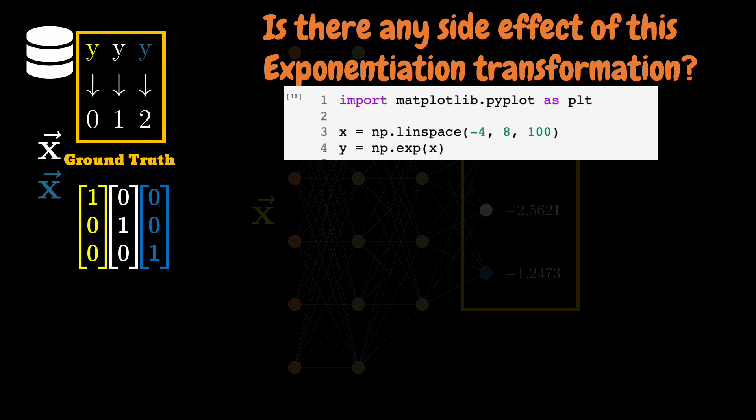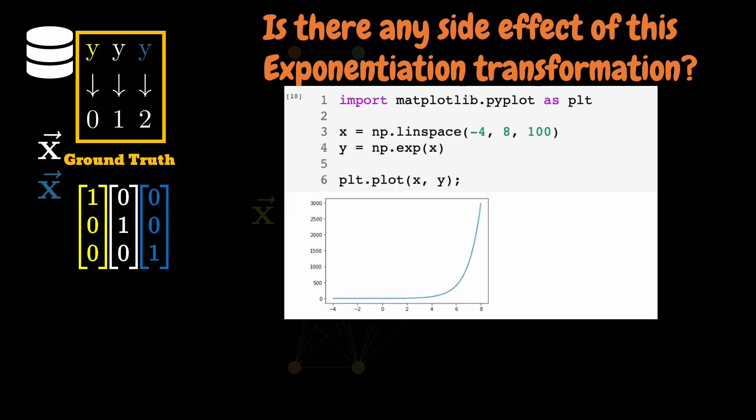To illustrate that I'll be using a simpler example first. Here I have set of values for variable X between minus 4 and 8 and I passed them to the exponential function and got the result stored in variable Y. The plot would look like this. What you need to notice here is that after some point, let's say let's pick a value of 2, the small change after that is causing a very large change in the output values.